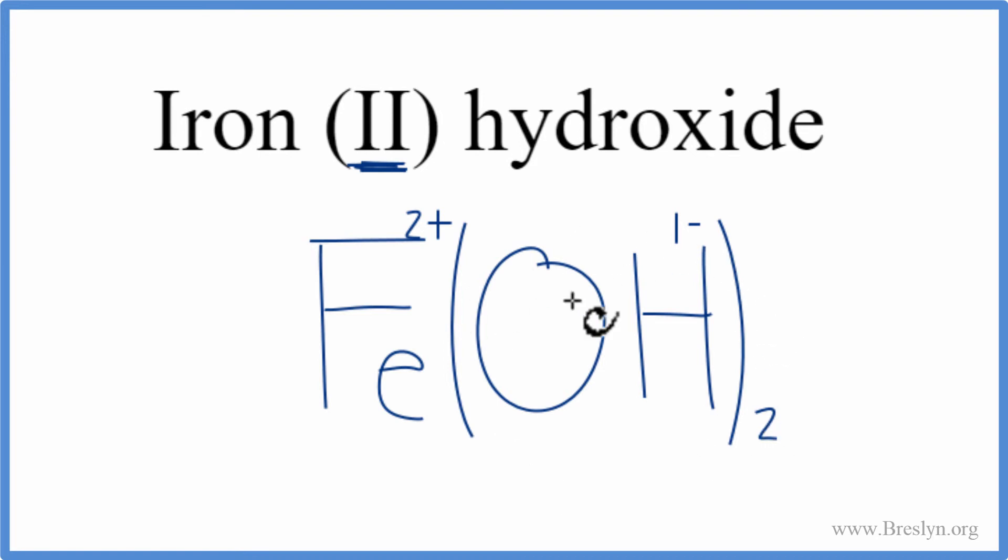We have 2 hydroxide, so 2 times the 1-, 2-. 1 times the 2+, 2+. Those add up to 0, the net charge is 0. This is the correct formula for iron (II) hydroxide.